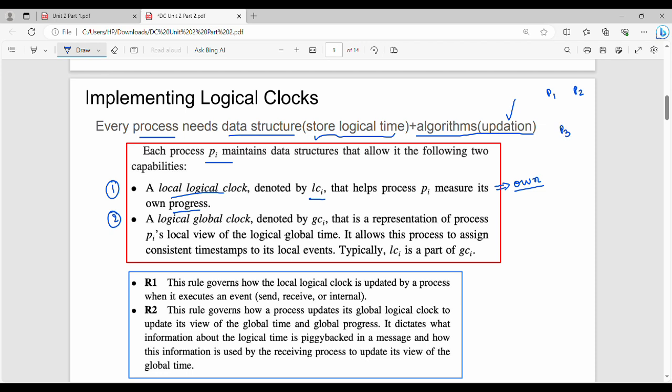What is the process of P1? There are two values. One is LC_i, the process's own logical time. Second, GC_i, which shows the global logical time across three processes.